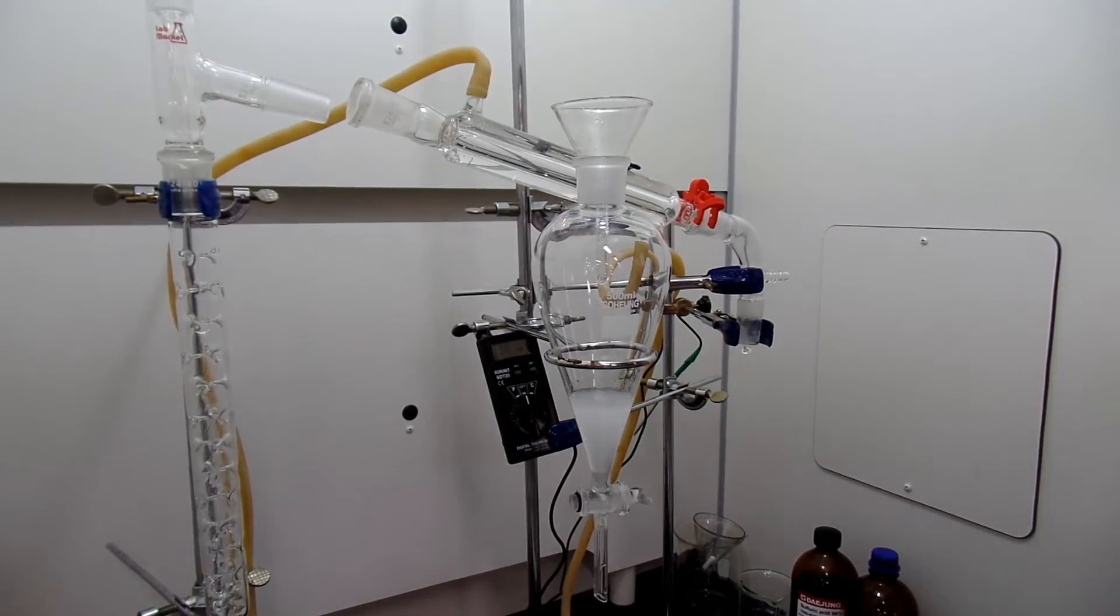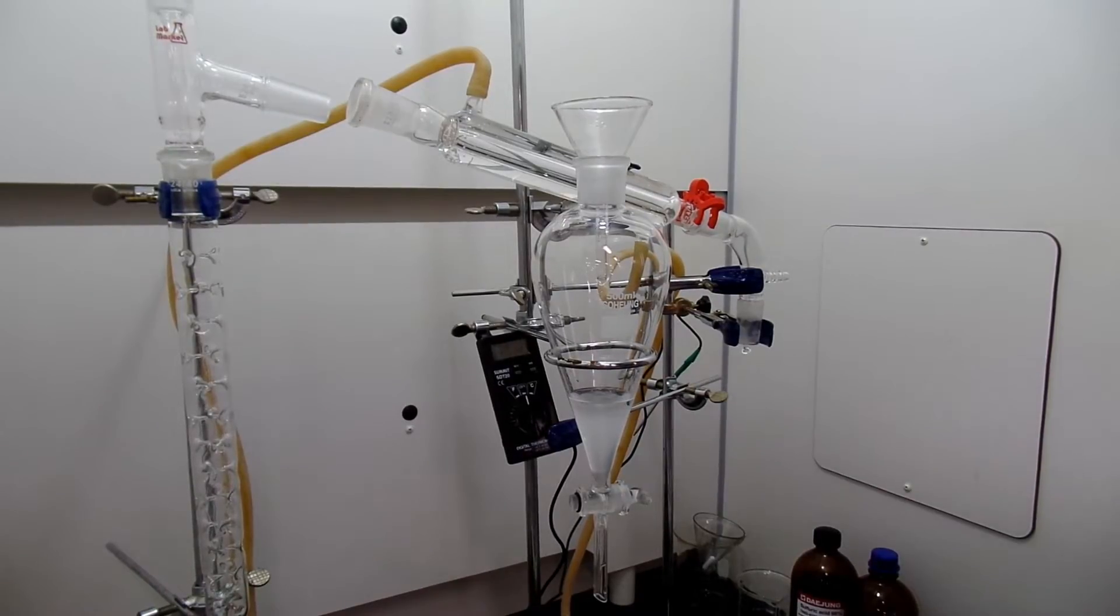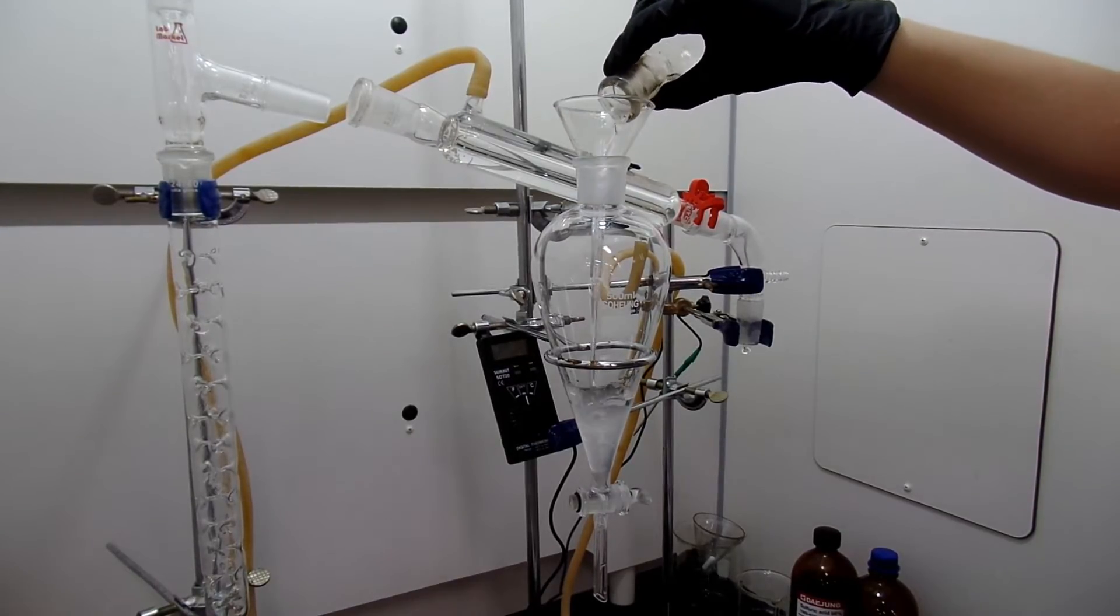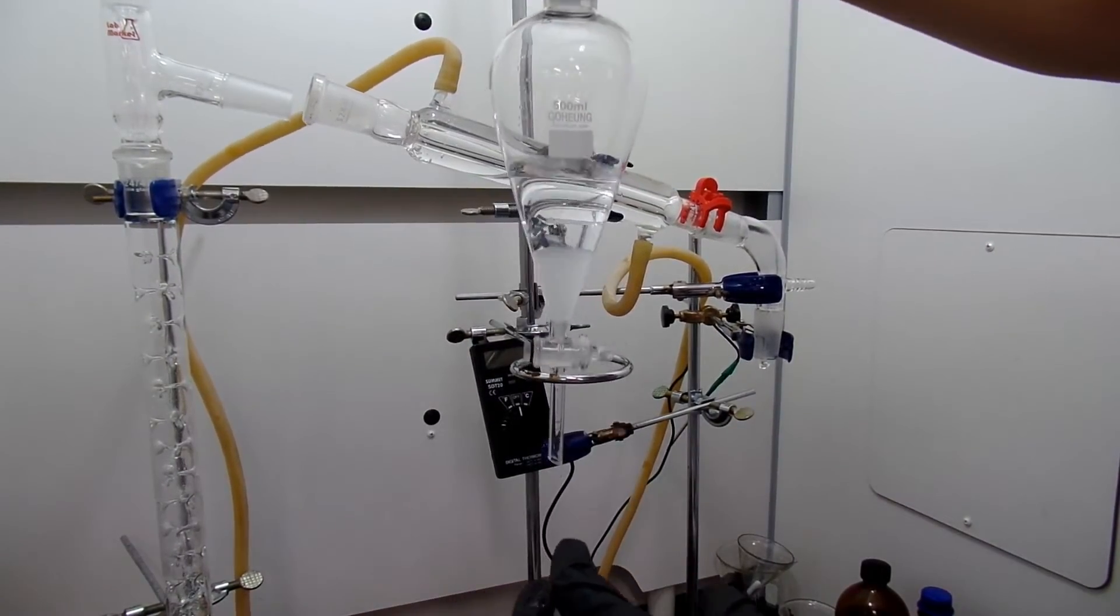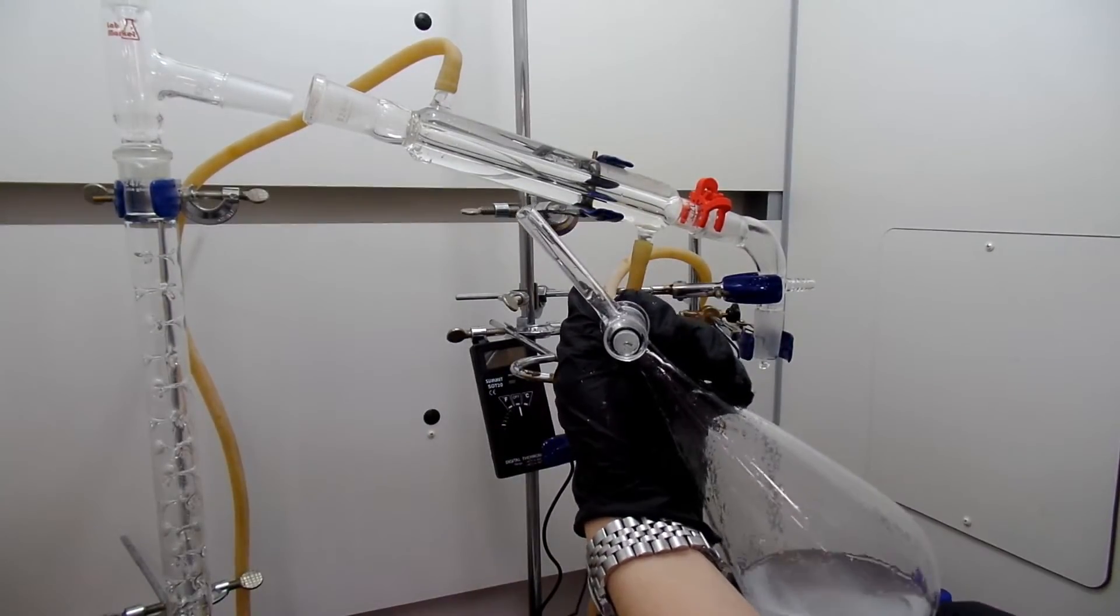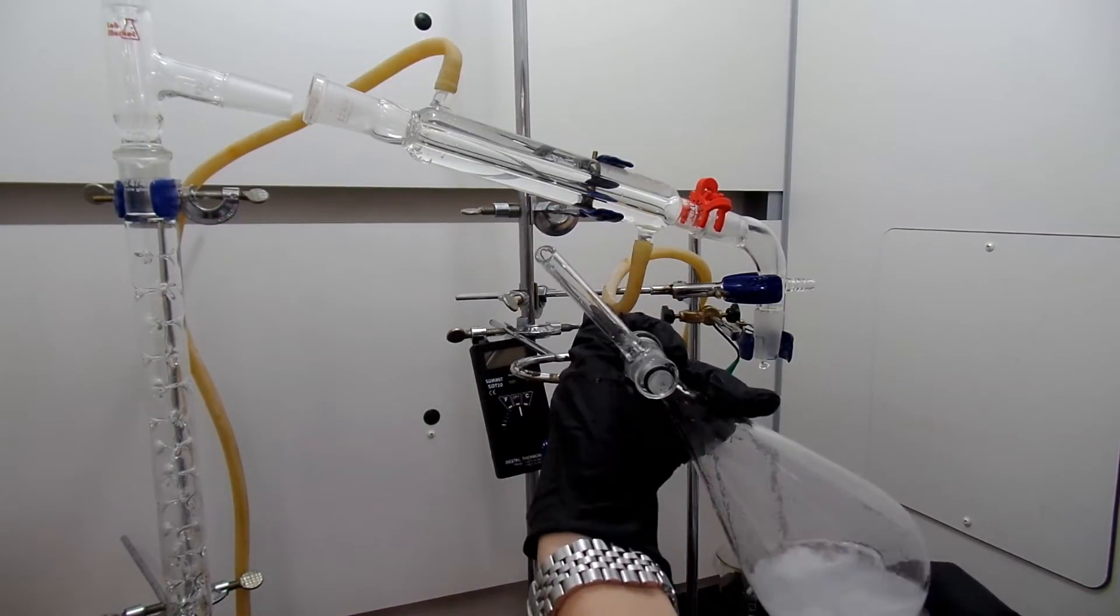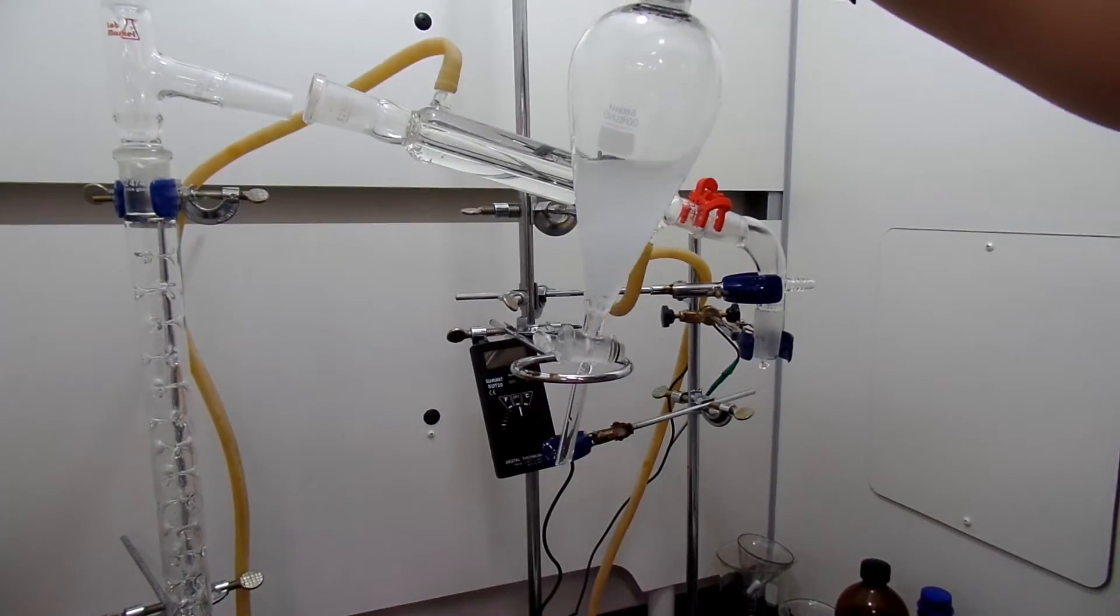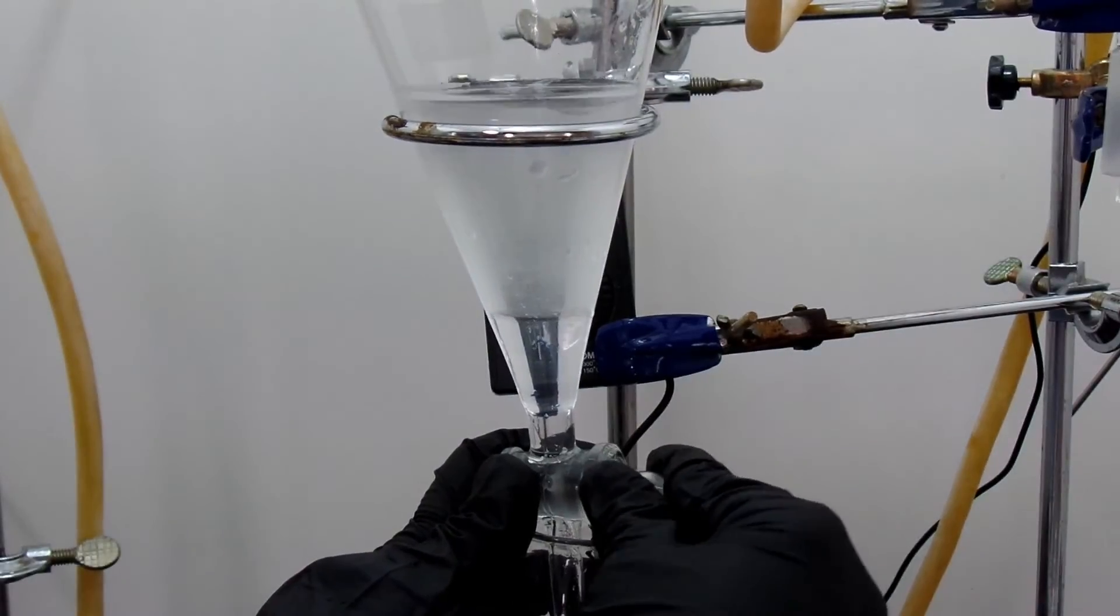For the separation, add everything to separatory funnel and wash the flask with some water. 100 ml of water is added and shaken. You need to vent this thing frequently. The lower layer is obtained.